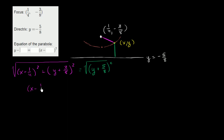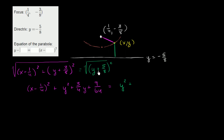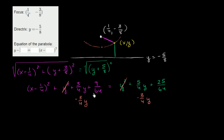To simplify, we square both sides. We get (x - 1/4)² plus, expanding the left side: y² + (3/4)y + 9/64. That equals the right side squared, which expands to y² + (5/4)y + 25/64. I have y² on both sides so I can cancel those terms. Then I subtract (3/4)y and 9/64 from both sides.